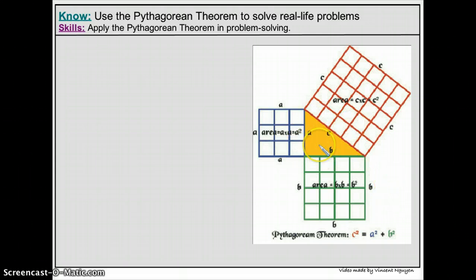So let's review the Pythagorean Theorem. It says that in a right triangle, the sum of the areas of the two legs, so a square plus b square, equals the square of the hypotenuse.